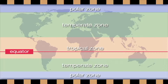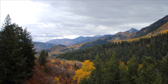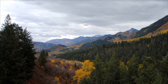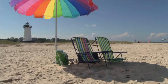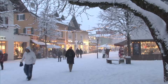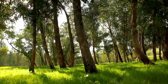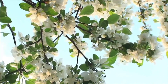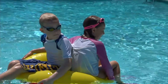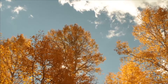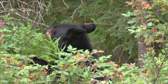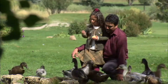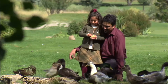Between the polar zone and tropical zone is the temperate zone. The temperate zone experiences a wide range of temperatures because the amount of sunlight it receives is determined by the season. A temperate climate can have warm summers and cool winters. Temperate climate zones have four distinct seasons: spring, summer, winter, and fall. The temperate climate zone is home to many types of plants and animals. Did you know that most humans live in temperate climates? It's true.